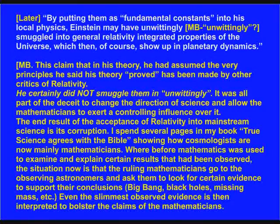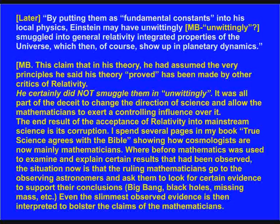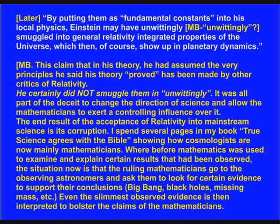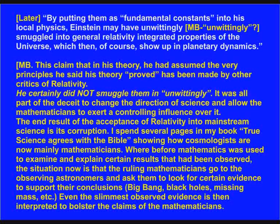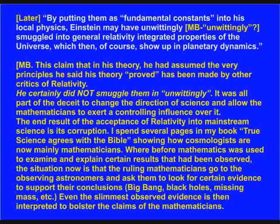And then later: 'By putting them as fundamental constants into his local physics, Einstein may have unwittingly smuggled into general relativity integrated properties of the universe, which then, of course, show up in planetary dynamics.' MB note: This claim that in his theory he had assumed the very principles he said his theory proved has been made by other critics of relativity. He certainly did not smuggle them in unwittingly — it was all part of the deceit to change the direction of science and allow the mathematicians to exert a controlling influence over it.